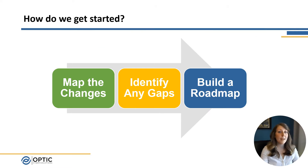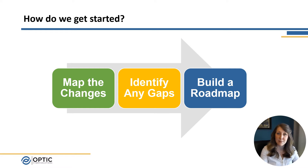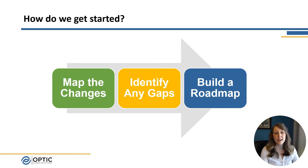So how do we get started? First, we need to map the change, and as I mentioned, NIST has done a lot of this work for us already. Then we need to identify any gaps that we have in our existing cybersecurity capabilities. And finally, we can build a roadmap and create a plan for addressing these gaps. So let's get started.